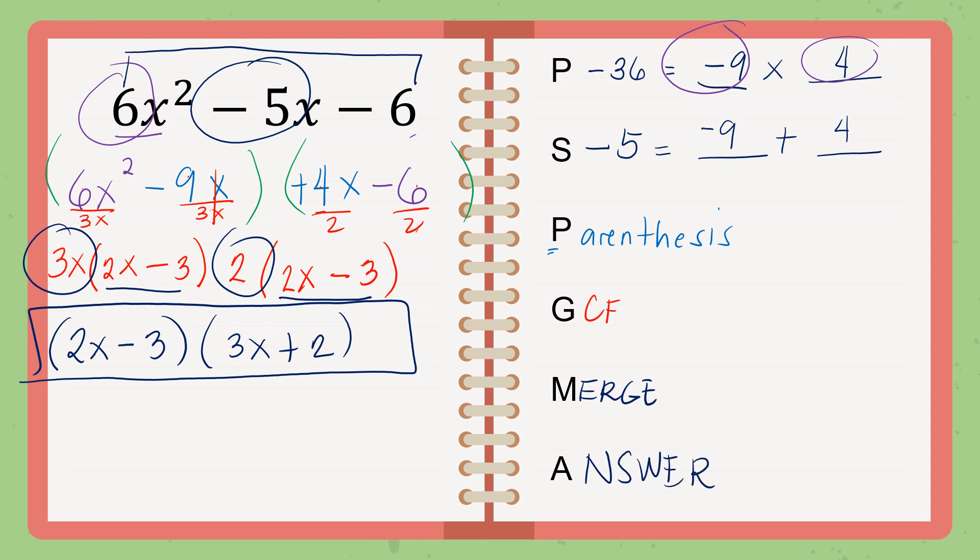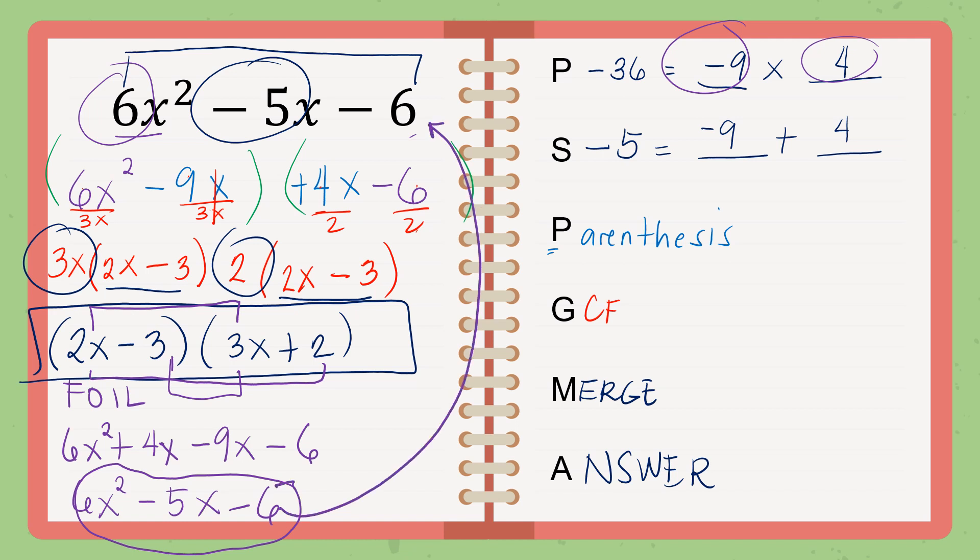Let's check. Maybe our answer is wrong. Using FOIL method again. Okay? So, 2x times 3x and that is 6x squared. Outer. 2x multiplied by 2. That is positive 4x. Then, negative 3 multiplied by positive 3x and that is negative 9x. Then, negative 3 times 2 is negative 6. So 6x squared minus 5x minus 6. As you can see here, it's the same as the question. And your answer is correct.